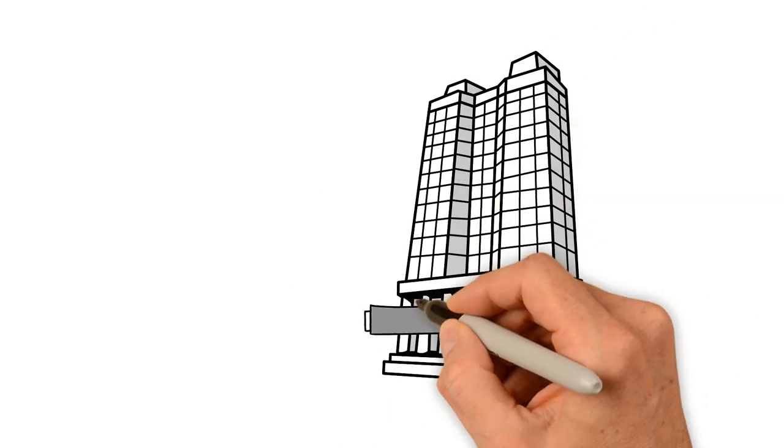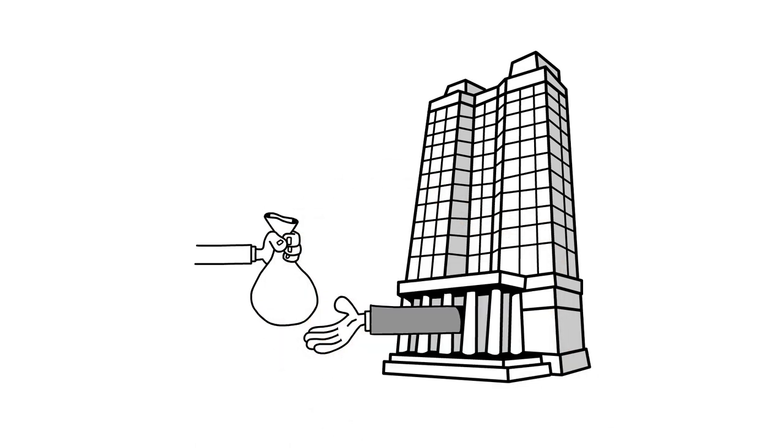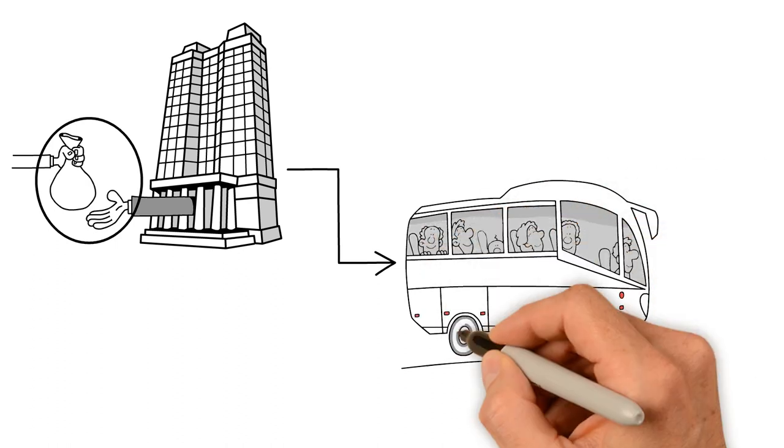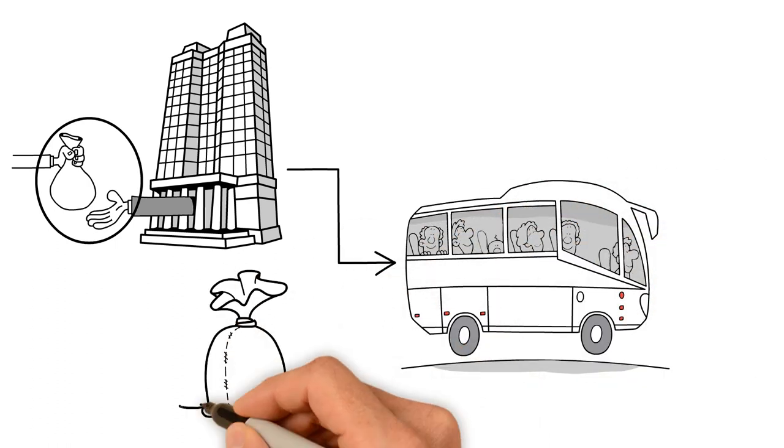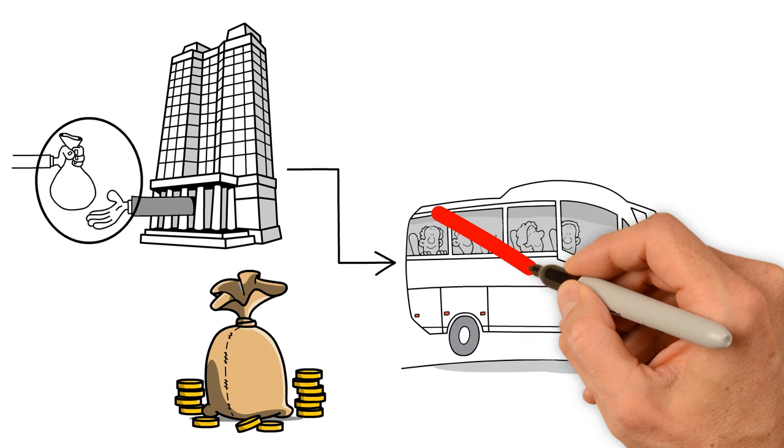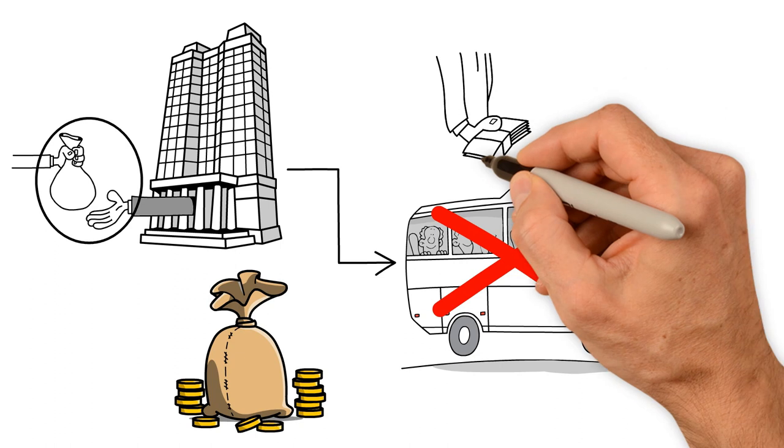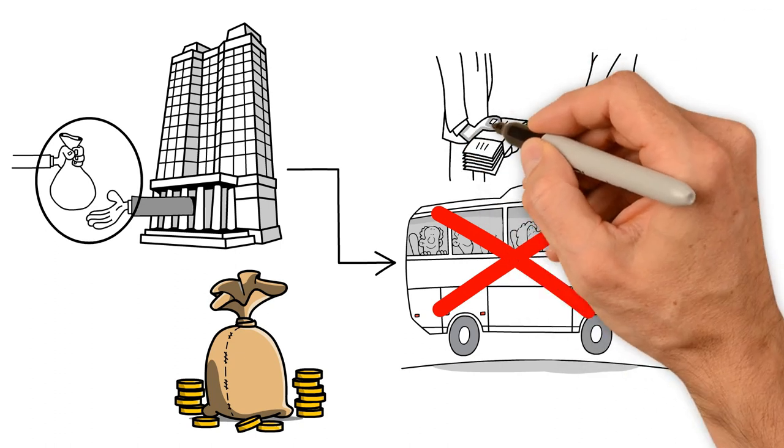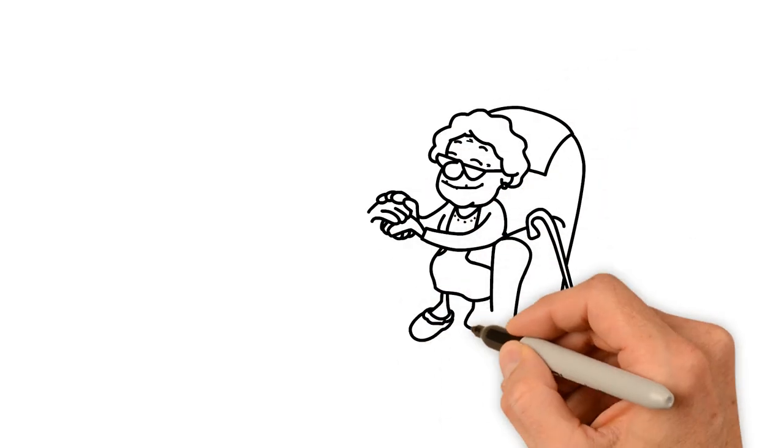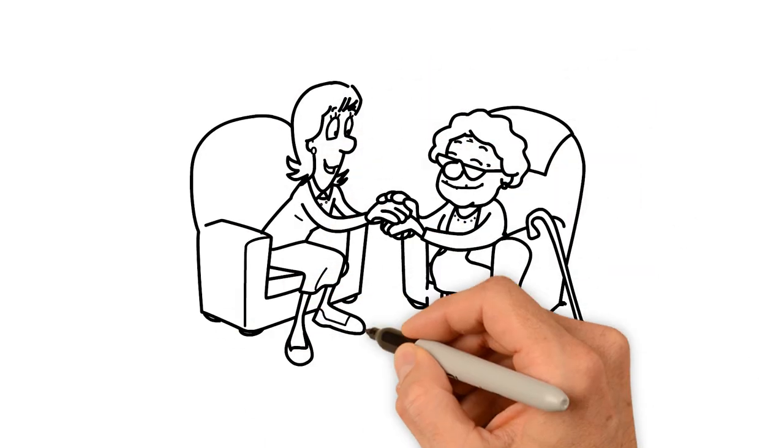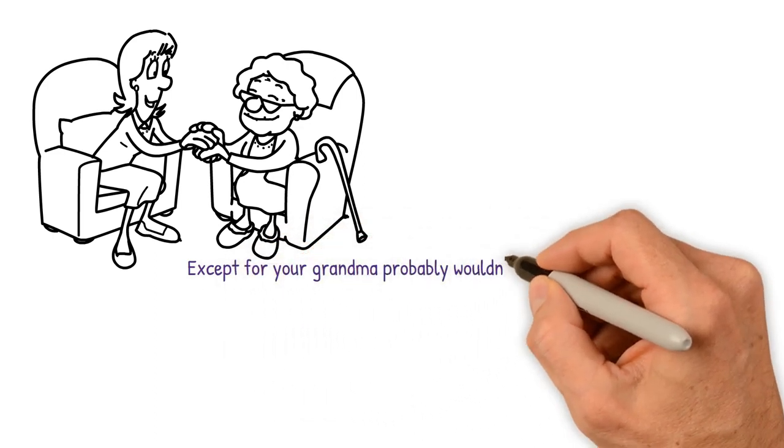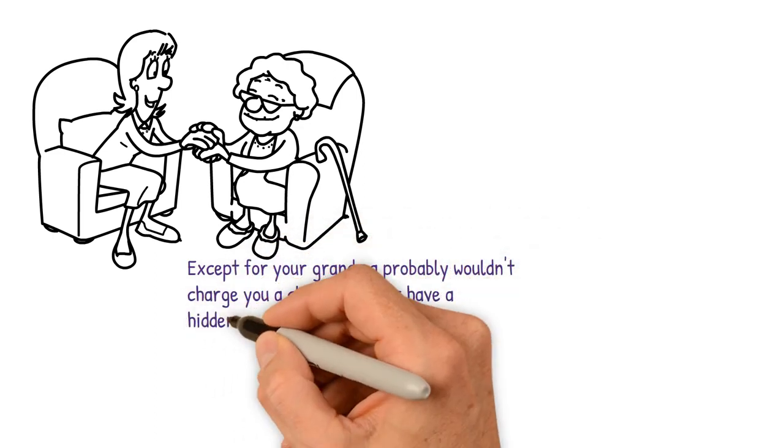But then people started getting greedy. They started opening multiple properties, hiring cleaning services to handle the mess and jacking up prices. Suddenly it wasn't about sharing your home with travelers anymore. It was about making as much money as possible. And that's when things started to go south. Guests were no longer treated like guests. They were treated like a nuisance. A necessary evil to put up with to get those sweet Airbnb dollars. The more the experience became like staying at your grandma's house, except your grandma probably wouldn't charge you a cleaning fee or have a hidden camera in the bathroom.